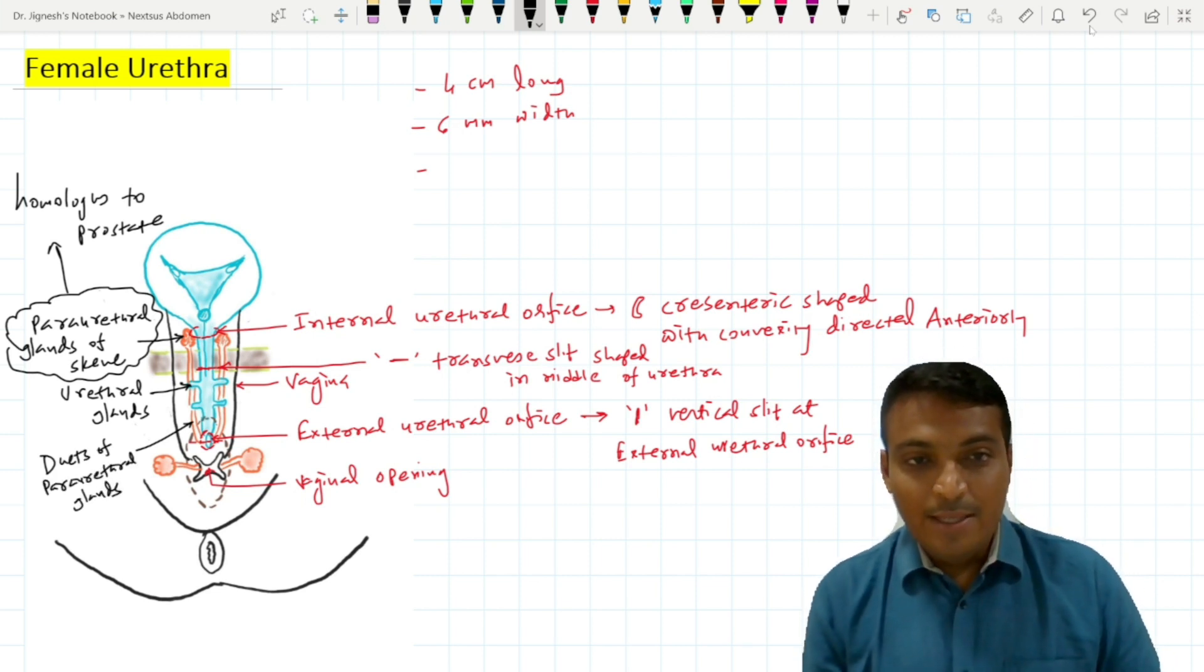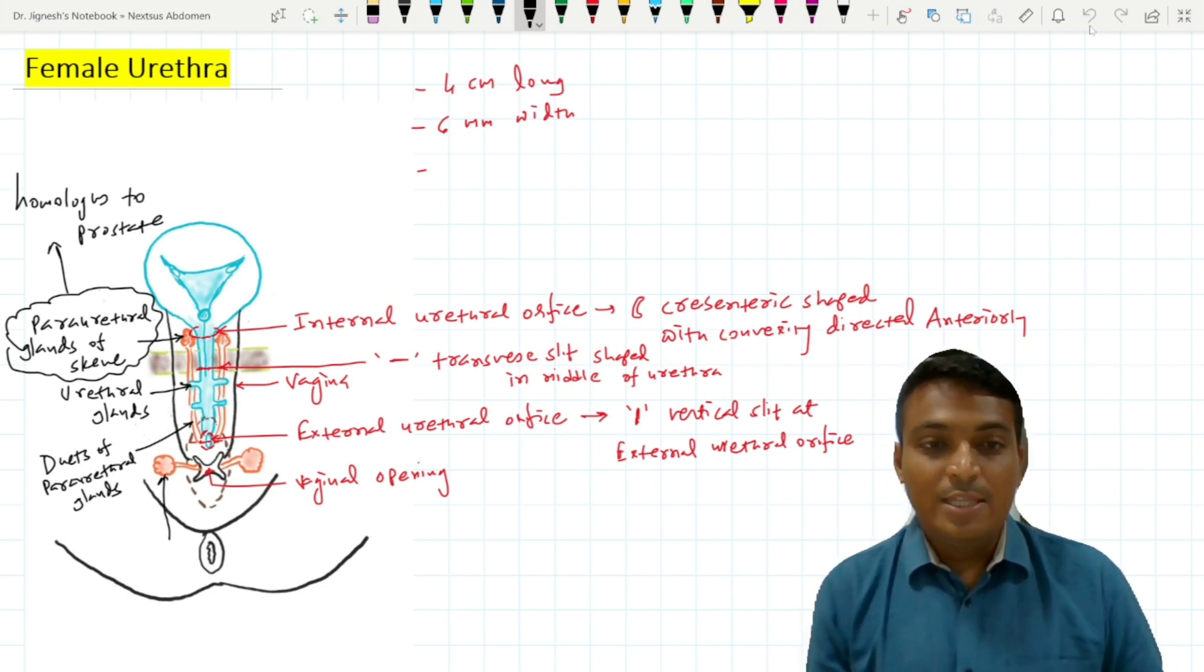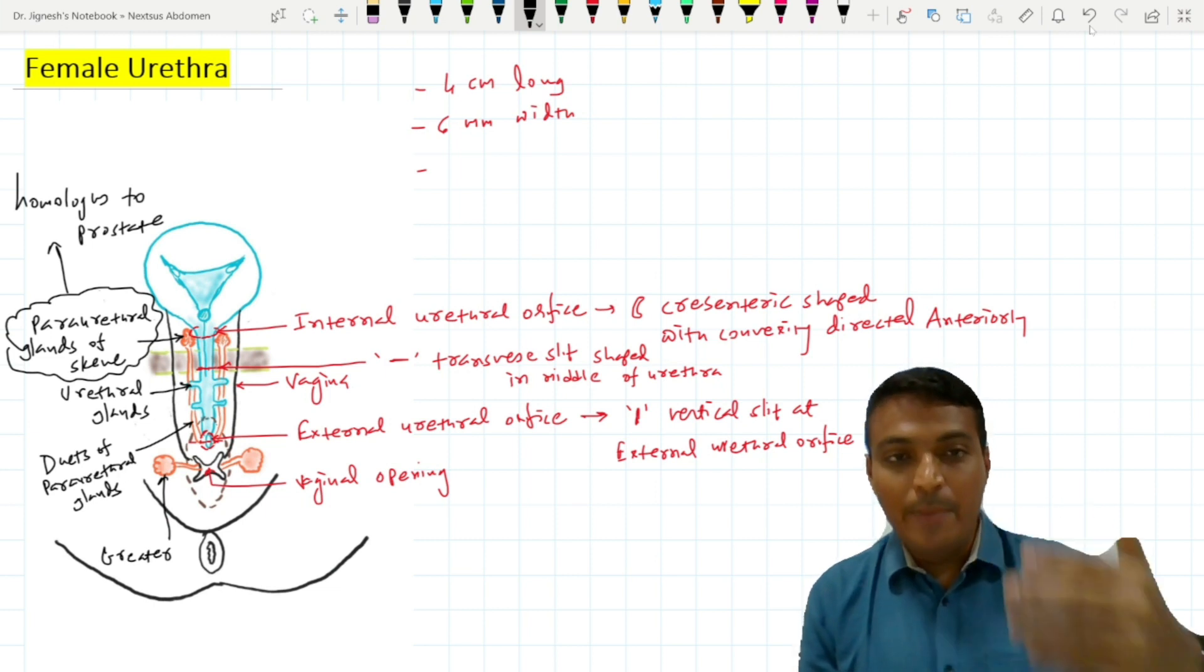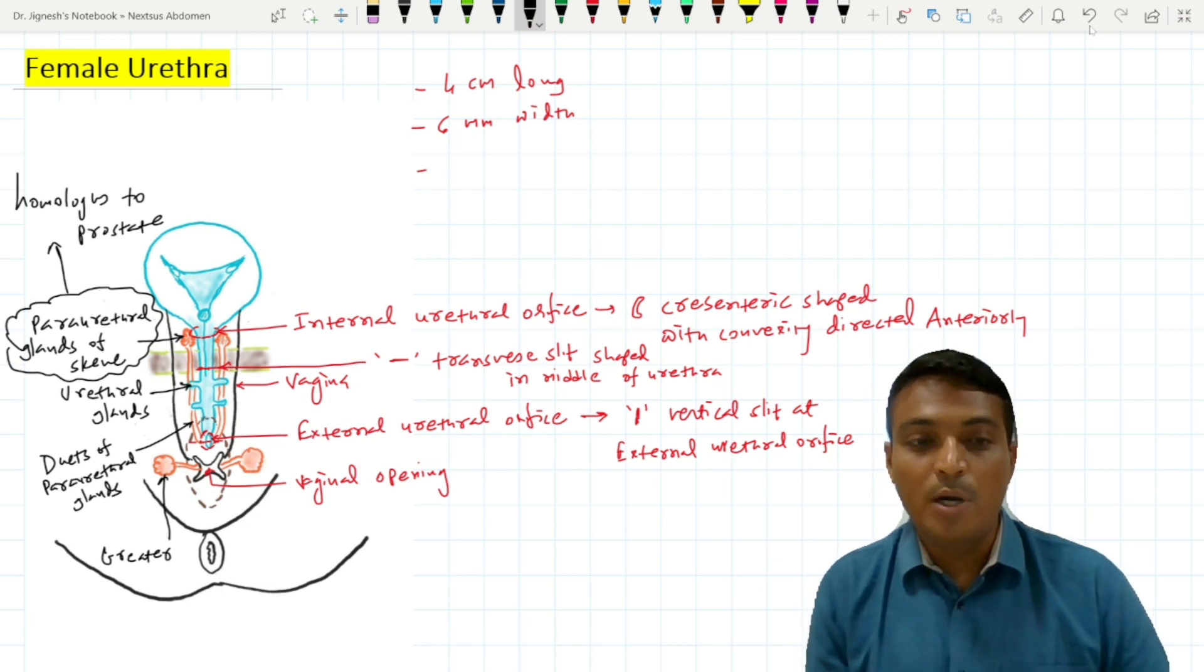One additional gland that opens into the lumen of the vagina is the greater vestibular gland. These greater vestibular glands are homologous to the bulbourethral glands of the male. The important difference is that the bulbourethral glands of the male are present within the deep perineal pouch, while the greater vestibular glands are present within the superficial perineal pouch.